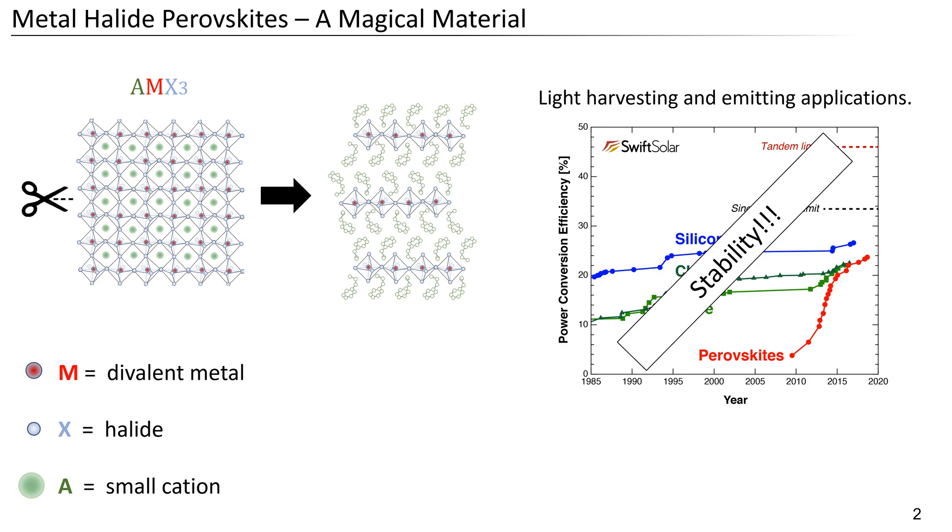In these 2D perovskites, electron-hole pairs, so-called excitons, dominate their optoelectronic properties rather than free charge carriers like in their bulk counterparts. And the dynamics of these excitons is not yet well understood. For example, we don't know how fast and far excitons travel in these materials, which is important information when making efficient perovskite solar cells.